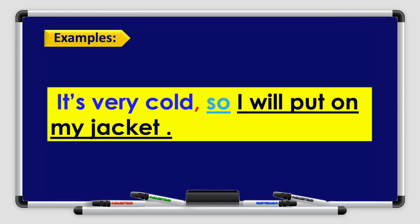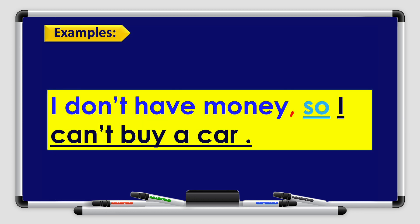Let's see a few examples. It's very cold, so I will put on my jacket. Why am I going to put on my jacket? Because it is very cold. Another example: I don't have money, so I can't buy a car. Why can't I buy a car? As a result of not having enough money.